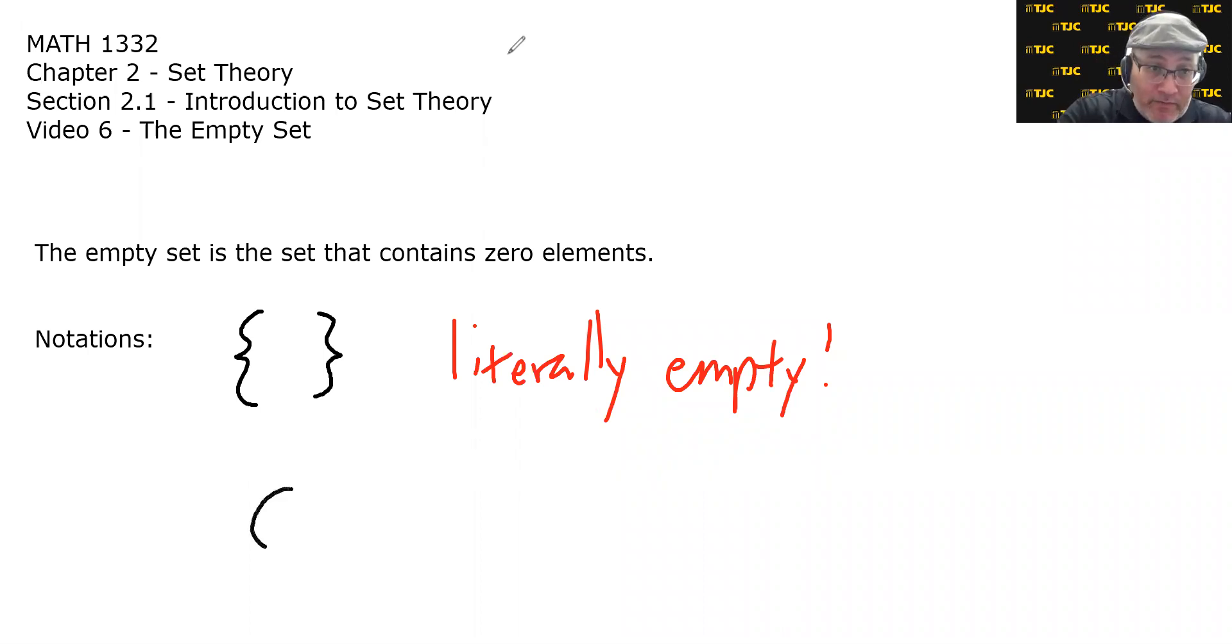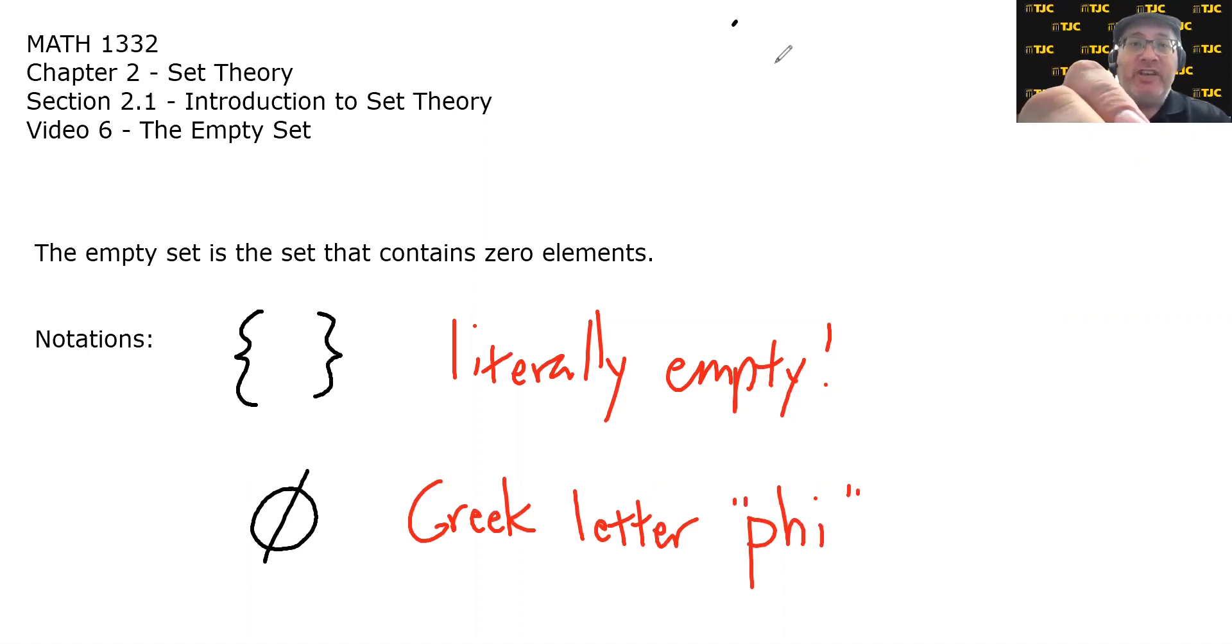But there's another symbol or notation for the empty set. And you may have seen this one before. It looks like a circle with a line through it. It's actually the Greek letter phi. We won't call it the Greek letter phi. We'll just call it the empty set. So if you see either of these two symbols, a set in roster form that is literally empty, or a circle with a slash through it, it means the empty set, the set that contains nothing in it.